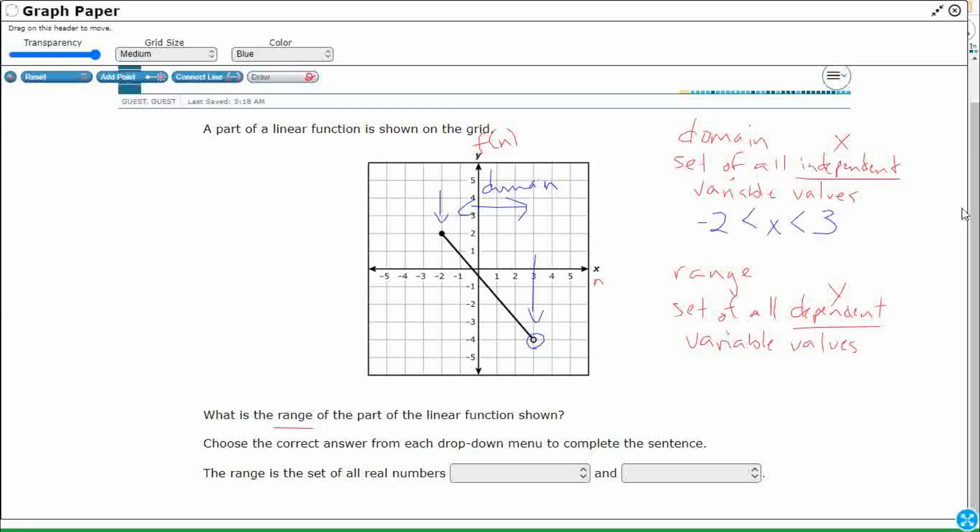But you see how we get a closed circle right there? It means we're actually going to include negative two. So we can better represent that as x is greater than or equal to negative two, because it could be negative two, and then less than three. So that's the domain. We're going to avoid those ones, because we're going to go for our dependent variable values. We're going up and down.